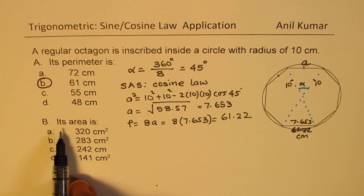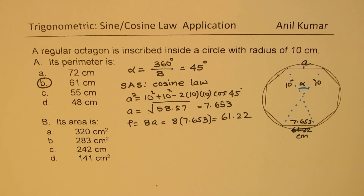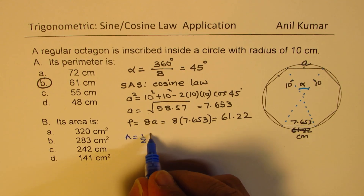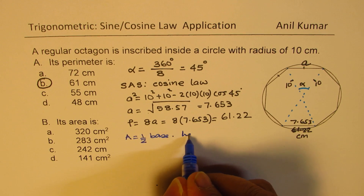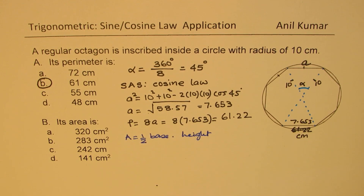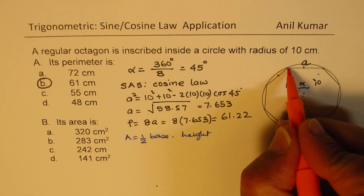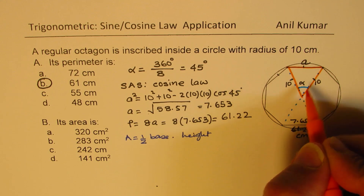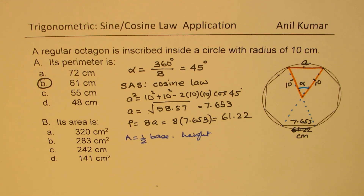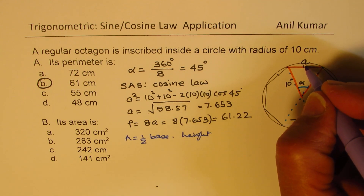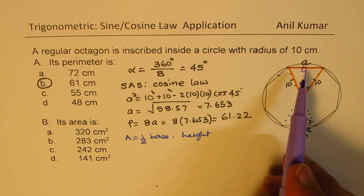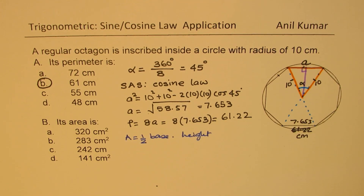Now let's do Part B, where we need to find the area. The area of each triangle is half base times height. Since it's an isosceles triangle, the altitude will divide the opposite side into equal parts.